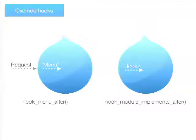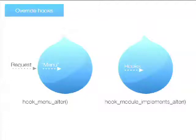There are also all kinds of other cases like XMLRPC callbacks or cron callbacks that don't go through the menu system. There's a very powerful function called hook_module_implements_alter that allows you to do anything with hooks — you can remove hooks from modules, add other hooks instead, and do all kinds of things. It's very powerful, but very dangerous at the same time, just like hook_menu_alter. These two hooks allow you to alter almost anything in Drupal core without applying custom patches.